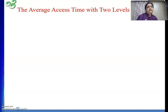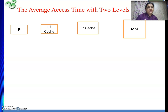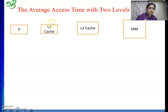Previously when we did the numericals, only one cache memory was there. This time we are going to have two levels of cache memory: L1 and L2. Suppose this is my processor, and here L1 cache, then L2 cache, and your main memory. L1 is of smallest size, then smaller, and main memory is the biggest compared to these two.